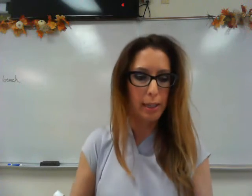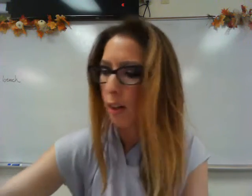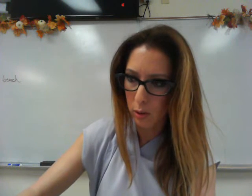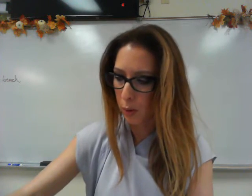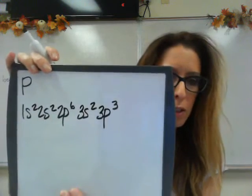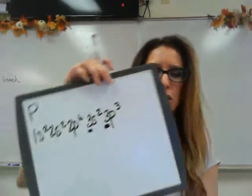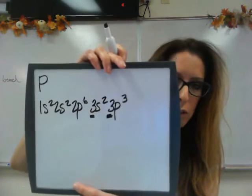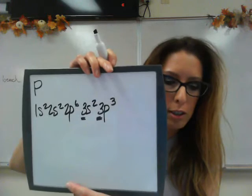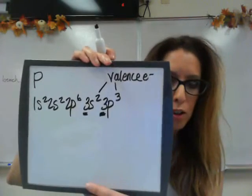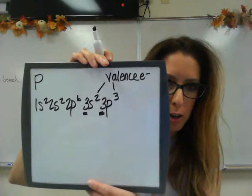Let's do student exercise number 9: write the electron configuration for phosphorus. Phosphorus is 1s2, 2s2, 2p6, 3s2, 3p3. I'm going to note the highest energy level, which is 3. The electrons in the third energy level are the highest — those are my valence electrons. I have five of them if I add the two and the three together.